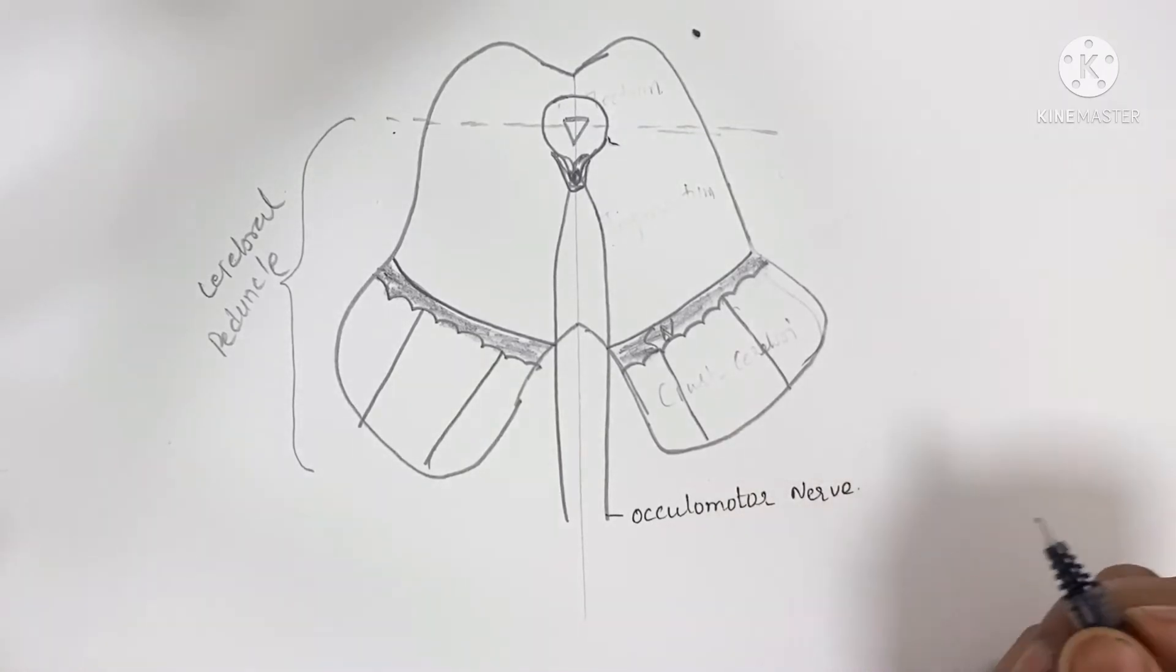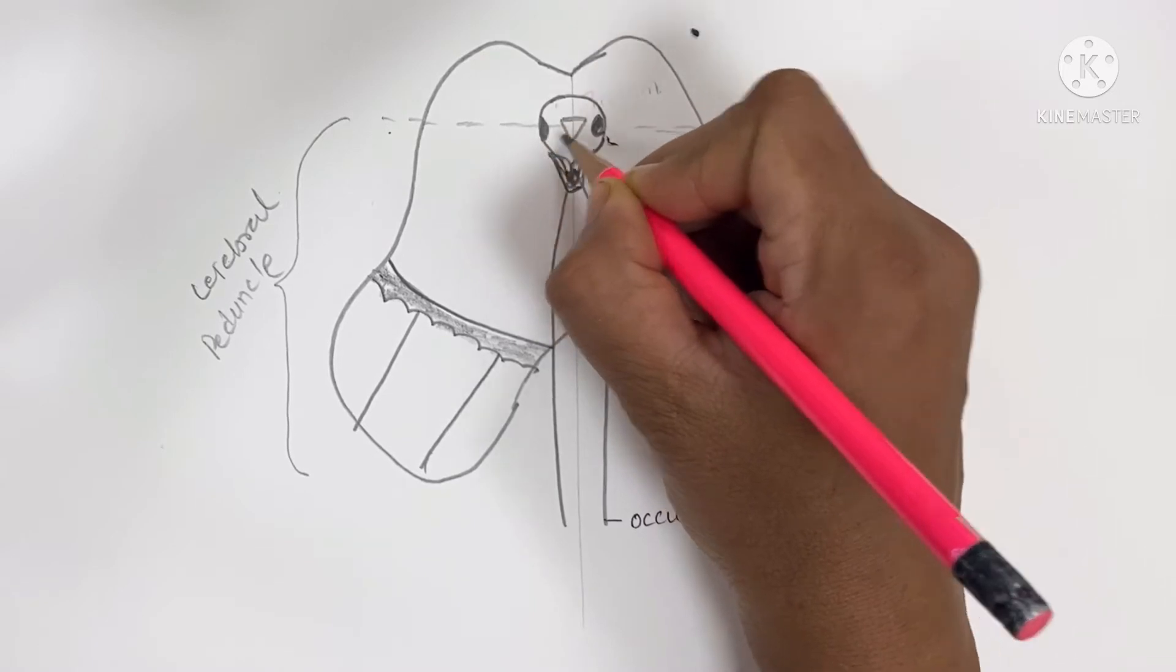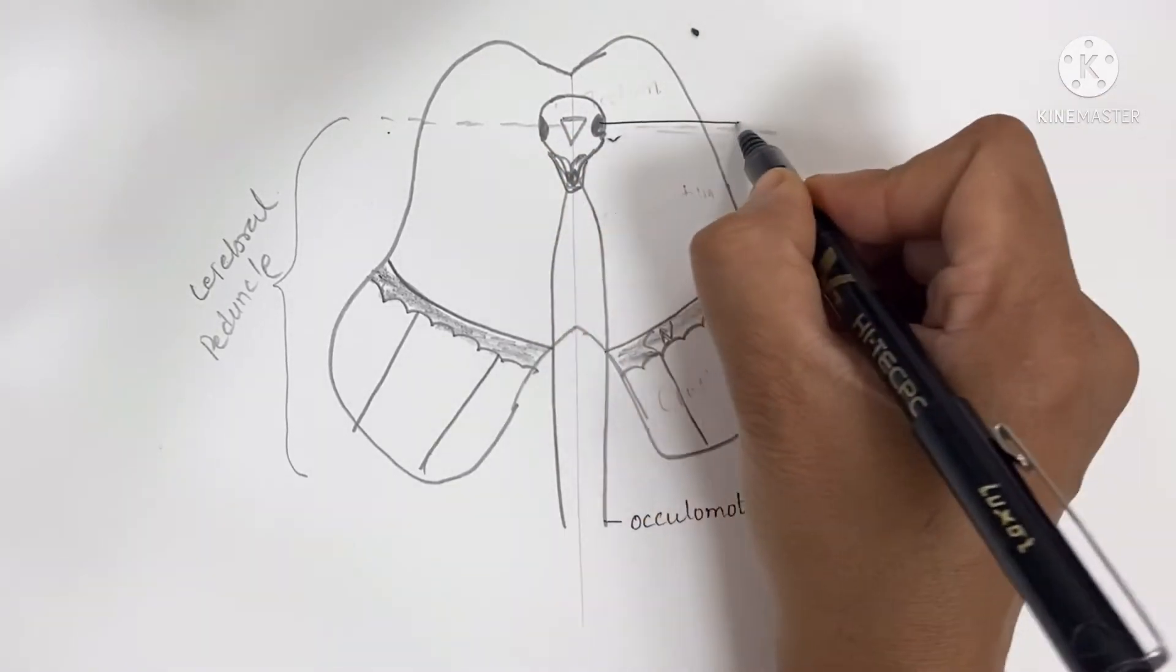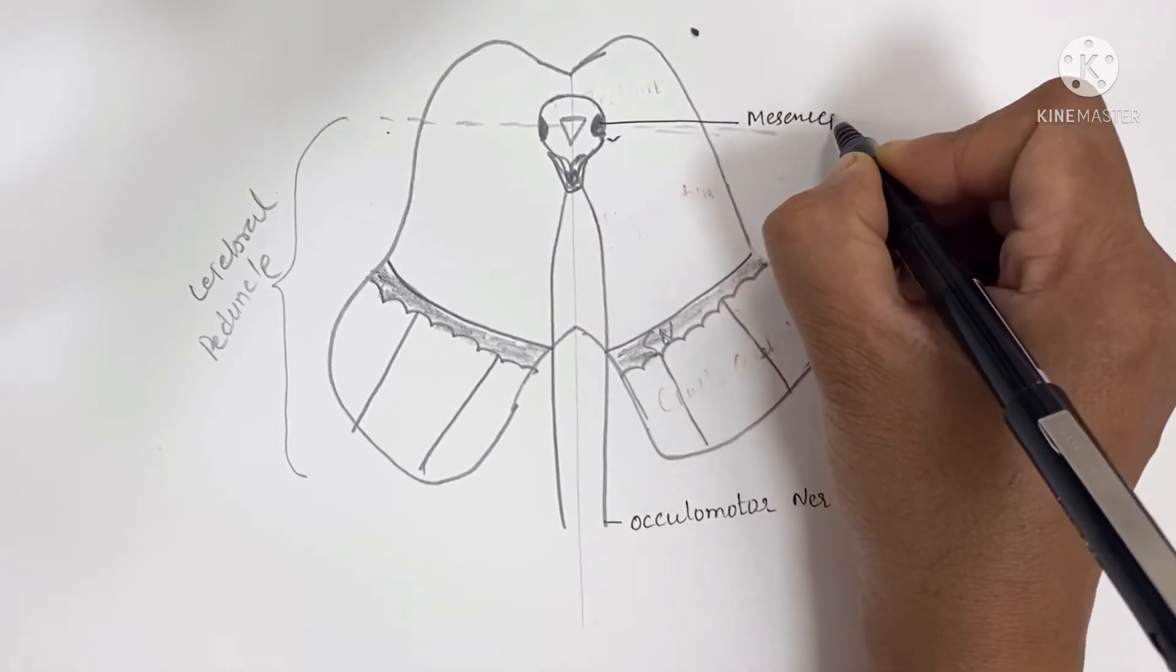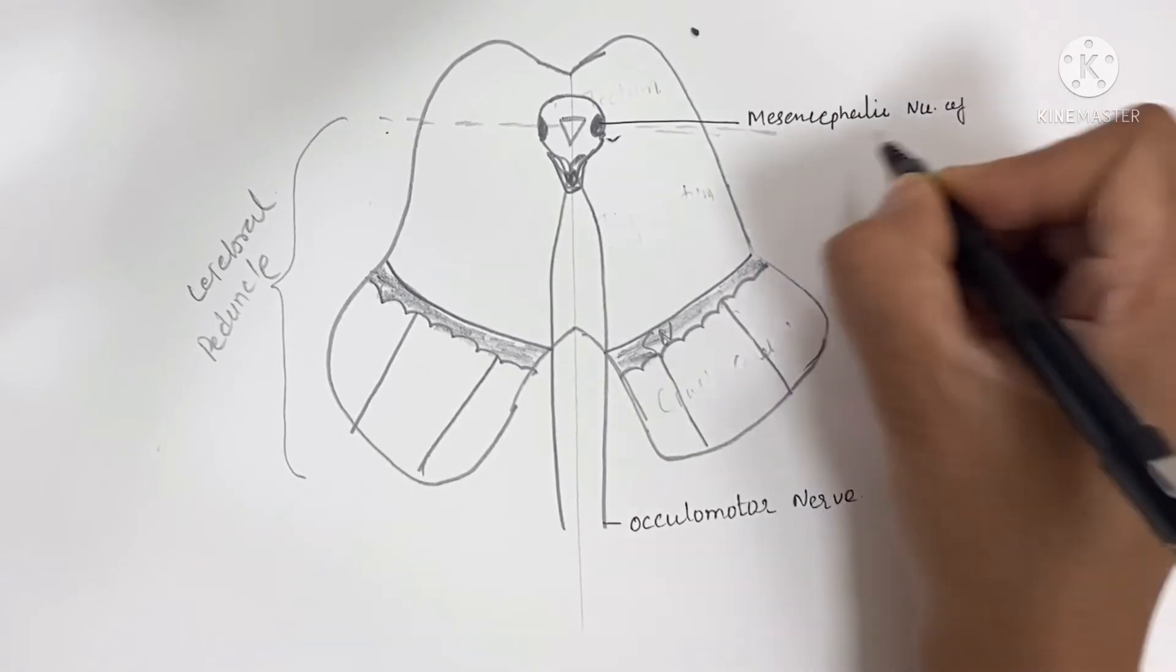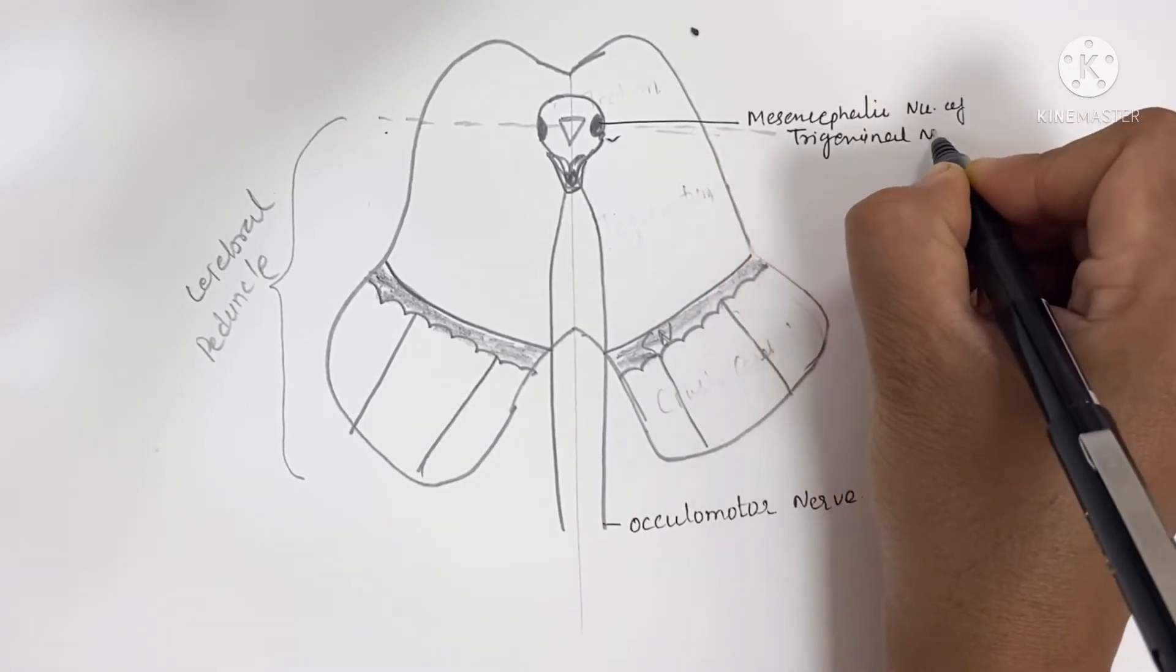The mesencephalic nucleus extends from the upper part of the pons to the midbrain. It carries proprioceptive impulses from the muscles of mastication, ocular muscles, temporomandibular joint, teeth, and from the extrinsic muscles of the tongue.